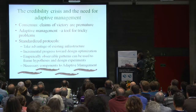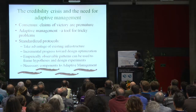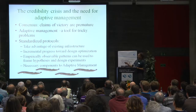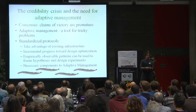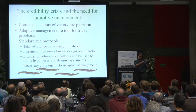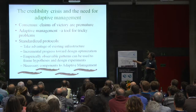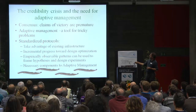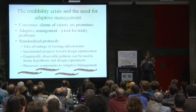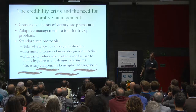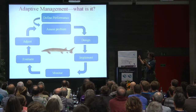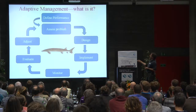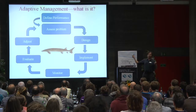So where are we? We have a consensus that the claims of victory are premature and that the problem is challenging, difficult, and complicated. There's another tool available for challenging, difficult, complicated jobs, and that's called adaptive management. Basically, what adaptive management does is require that you evaluate what you're doing and make changes as you go — just like what was suggested earlier today. Adaptive management can be described with a flowchart where you start by identifying a problem.